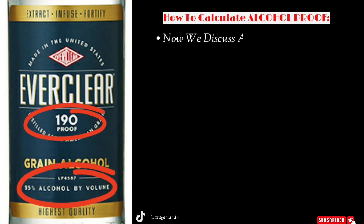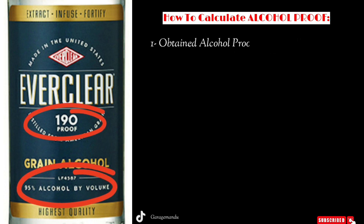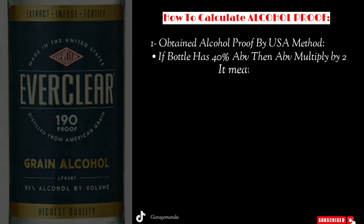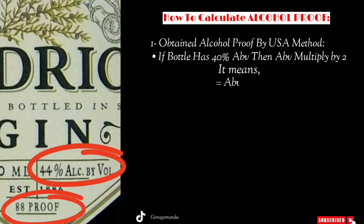Now we discuss how to obtain alcohol proof. In the USA method, alcohol by volume is multiplied by two. This means if a bottle has 40 percent alcohol by volume, then it has 80 proof.